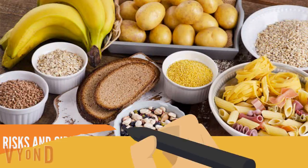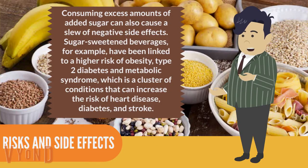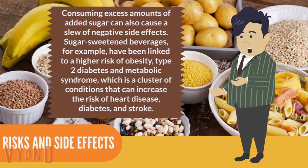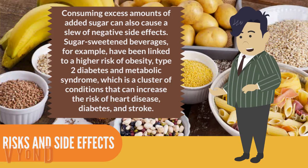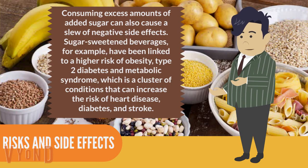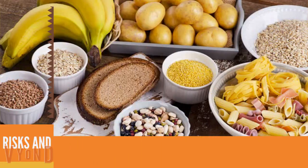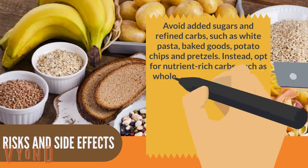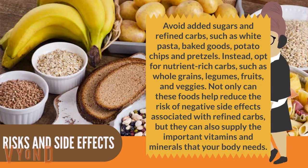Consuming excess amounts of added sugar can also cause a slew of negative side effects. Sugary-sweetened beverages, for example, have been linked to a higher risk of obesity, type 2 diabetes, and metabolic syndrome, which is a cluster of conditions that can increase the risk of heart disease, diabetes, and stroke. Avoid added sugars and refined carbs, such as white pasta, baked goods, potato chips, and pretzels.